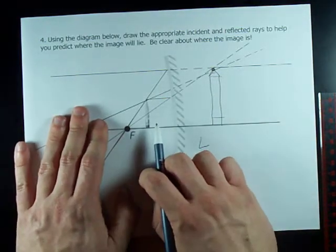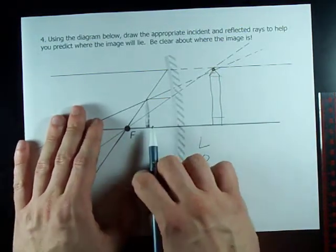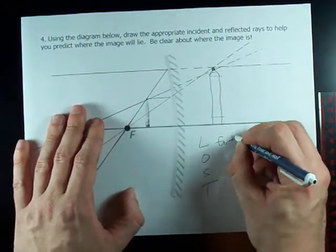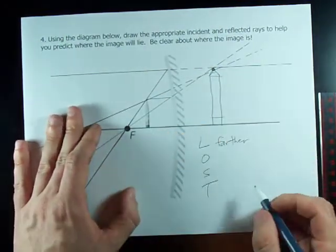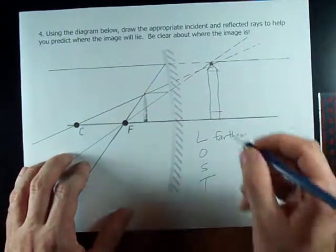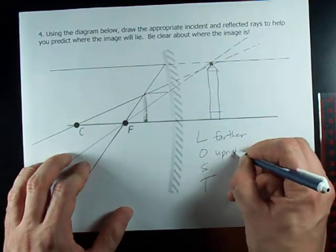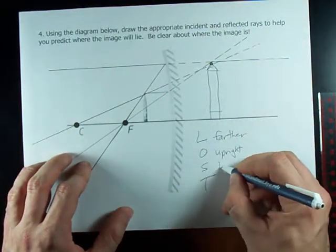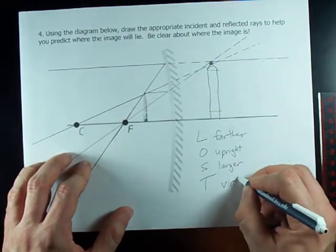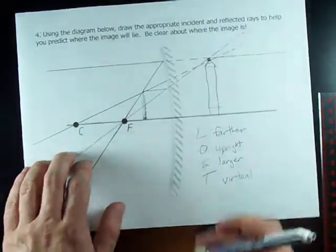The location. Now that actually looks like it's the same distance away. I'm pretty sure it's supposed to be farther away than the actual object is from the mirror on the opposite side. The orientation is upright or right side up. The size is definitely larger. And the type is virtual because it's on the opposite side of the mirror.